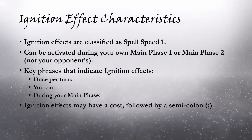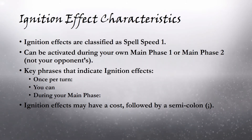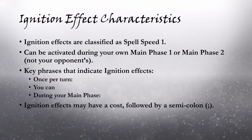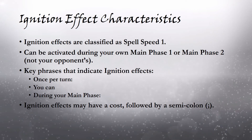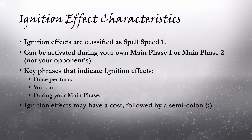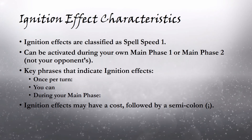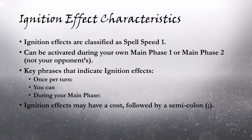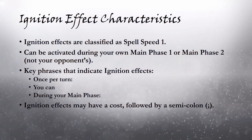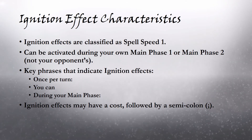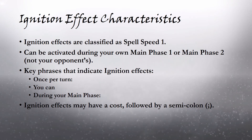Below, we have some characteristics of ignition effects. Ignition effects are classified as spell speed 1. They can be activated during your main phase 1 or main phase 2, but not your opponent's main phase 1 or main phase 2. The key phrases that indicate ignition effects include: once per turn, you can, and during your main phase. Ignition effects may have a cost, followed by a semicolon.